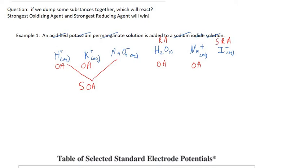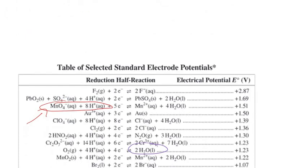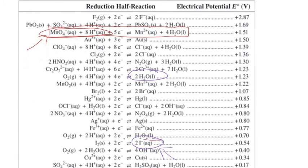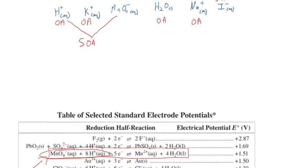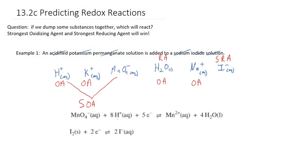Now we write out those half-reaction equations. Conveniently, we don't have to manually balance them — they're already given in the table. The balanced half-reaction for the strongest oxidizing agent is taken directly from the table, and likewise for the strongest reducing agent. These two halves are what's going to happen in our example.